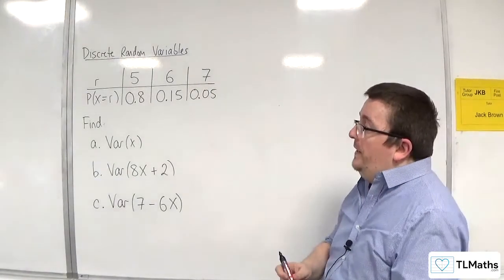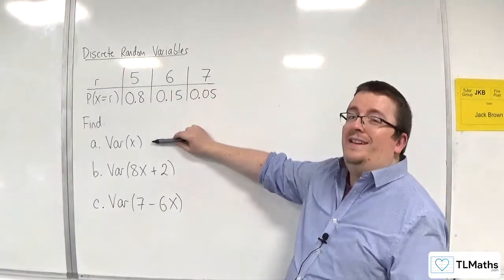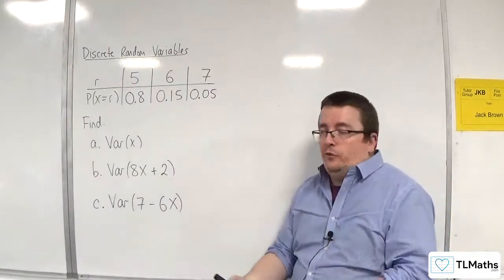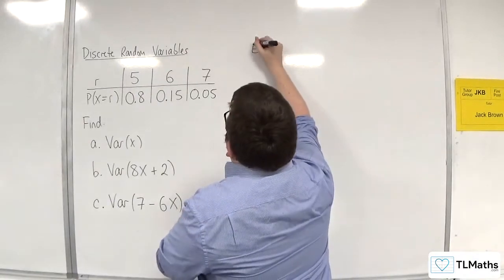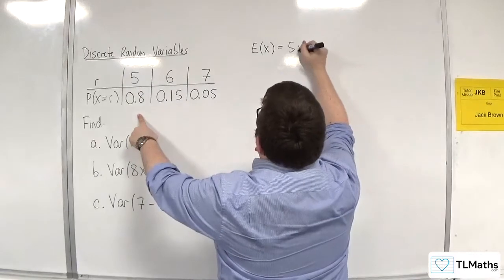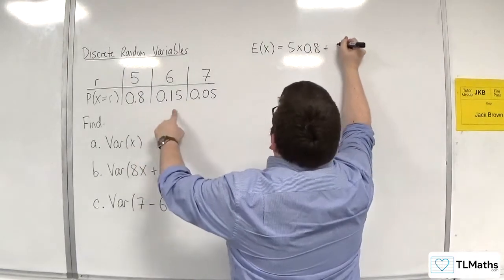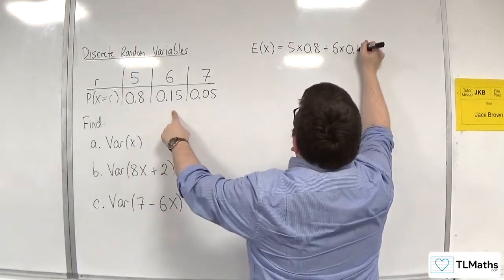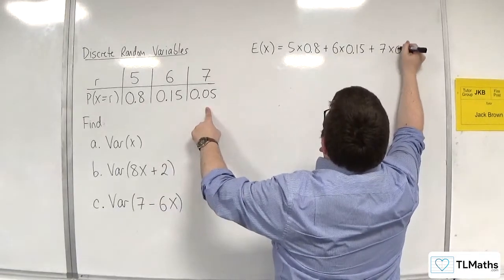So the first thing we need to do is find var of x, and in order to do that we're going to need E of x and E of x squared. So E of x is going to be 5 times 0.8 plus 6 times 0.15 plus 7 lots of 0.05.